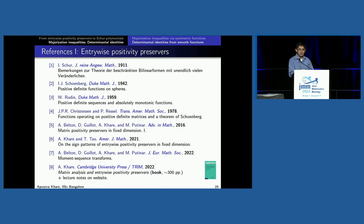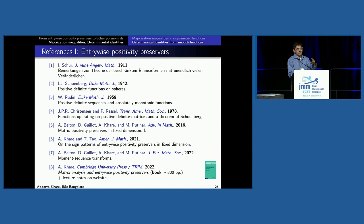For the three parts of the talk there are three sets of references. The first set starts with Schur, then Schoenberg who proved Schoenberg's theorem, Rudin who removed the continuity hypothesis and reduced the test set to rank three and Toeplitz matrices, and reference seven where we did the same for Hankel. Reference four: Christensen and Ressel also proved Schoenberg's theorem in an entirely different approach using extreme points. References five and six are the papers where we discovered Schur polynomials showing up to answer questions about preserving positivity in a fixed dimension via polynomials. Reference eight is the book covering much of the theory presented here.